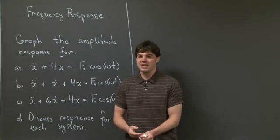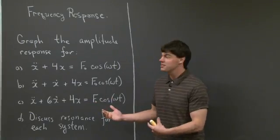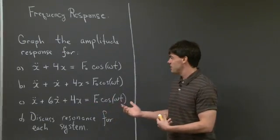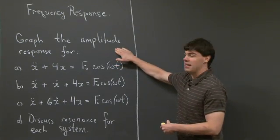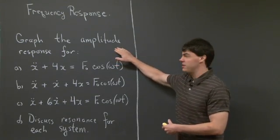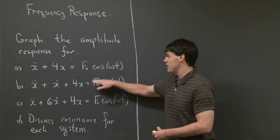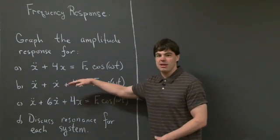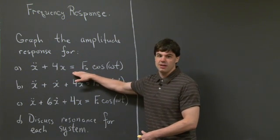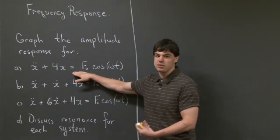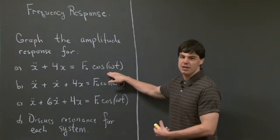Hi everyone. So today I'd like to talk about resonance frequency response. Specifically, we're going to take a look at a couple different differential equations, and we're asked to graph the amplitude response for each equation. You'll note that these equations a, b, and c have varying amounts of damping. For part a, we're asked to plot the amplitude response for x-double-dot plus 4x equals f₀ cosine(ωt).